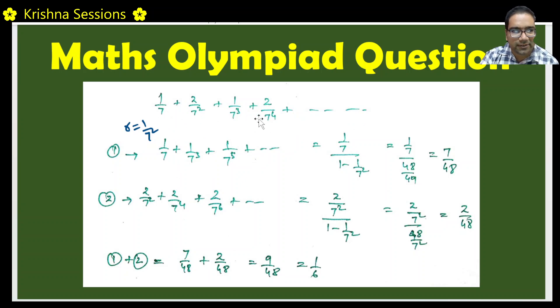Now let us take the second, fourth, sixth, eighth, all the even terms. Now here again if you see the ratio is again 1 by 7 square. This will become the second term by first term. 2 by 7 power 4 by 2 by 7 square is equal to 1 by 7 square. This by this is again 1 by 7 square.